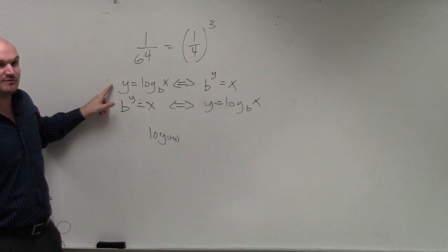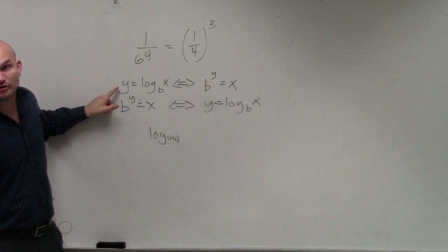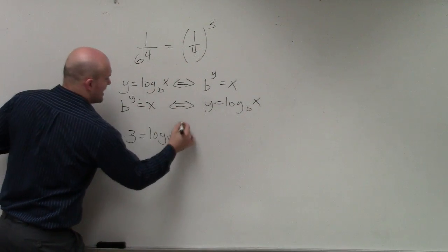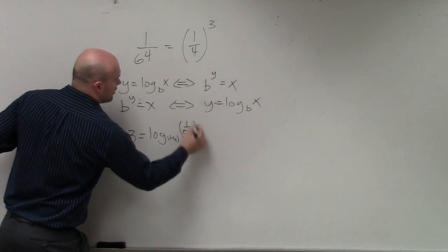And to write that in logarithmic form, that's what my logarithm is equal to. So I'll write is equal to 3, and therefore, that leaves me as 1 over 64 is my x.